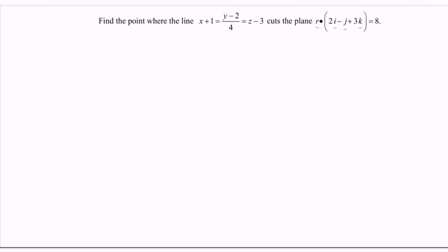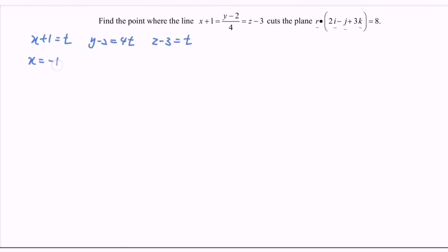Next, find the point where the line with the parametric equation cuts the plane r · n = 8. Expressing the line in parametric form: x + 1 = t, y − 2 = 4t, z − 3 = t. So x = −1 + t, y = 2 + 4t, z = 3 + t. That is the parametric form of the line.